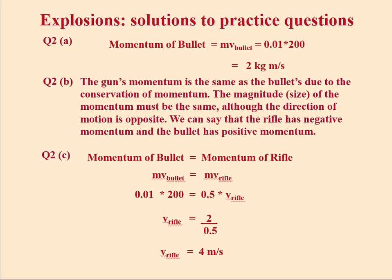Question 2b: explain why the value of the gun's momentum is the same as the bullet's momentum. The gun's momentum is the same as the bullet's due to the conservation of momentum. The magnitude or size of the momentum must be the same, although the direction of motion is opposite.